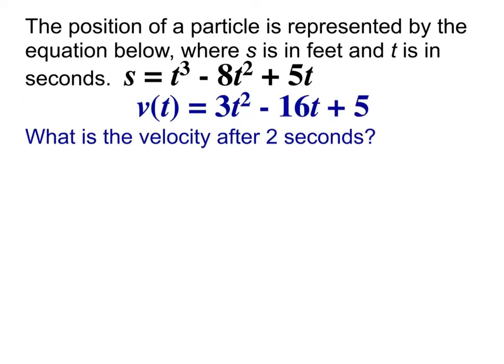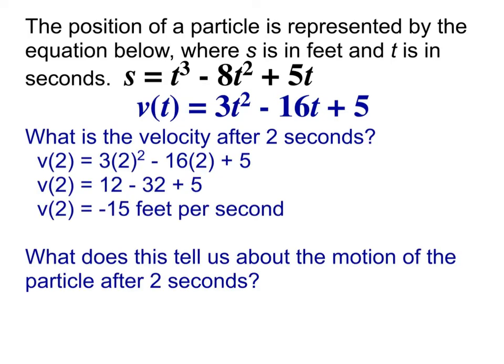Now that we have the velocity function, I'd like to know what the velocity was after 2 seconds. To find that, we plug 2 into our velocity function that we just found, and we end up with negative 15 feet per second. Did you remember the units? Make sure that you are. So it's negative 15 feet per second — that negative 15 is telling us that this is moving in the negative direction at 15 feet per second.